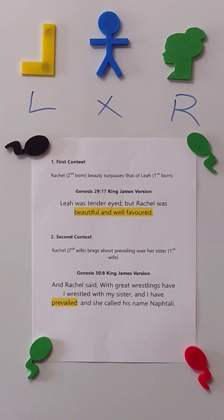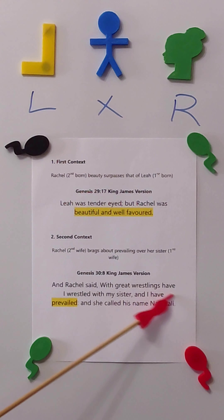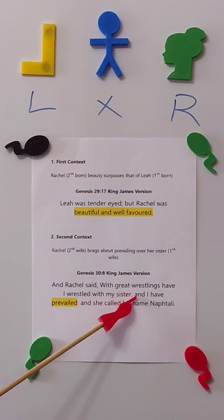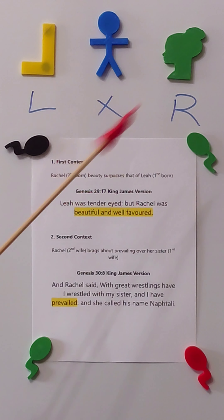In a second context, we read about Rachel — the second wife of Jacob — bragging about prevailing over her sister, Jacob's first wife. Genesis 30 verse 8: 'And Rachel said, With great wrestling have I wrestled with my sister and I have prevailed.' That's the CHA — to hold or to apprehend. The L is the arm — she prevailed over her sister and took the headship. That's how we have the RA in Rachel.